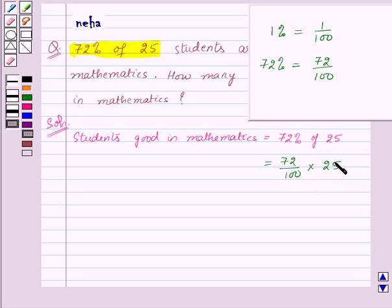Now 100 and 25 will cancel by the common factor 25, and 72 and 4 will cancel by the common factor 4. So we will get 18.